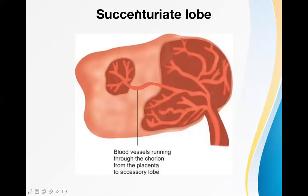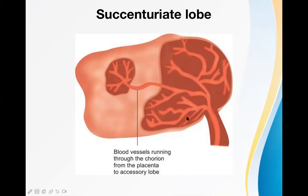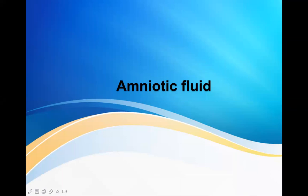In the schematic diagram, the main placenta is shown with the umbilical cord and chorionic vessels. One piece a bit far away from the main placenta, attached by a blood vessel, is the succenturiate lobe. It can easily be left behind in the uterine cavity after delivery of the baby or main placenta, leading to postpartum hemorrhage.